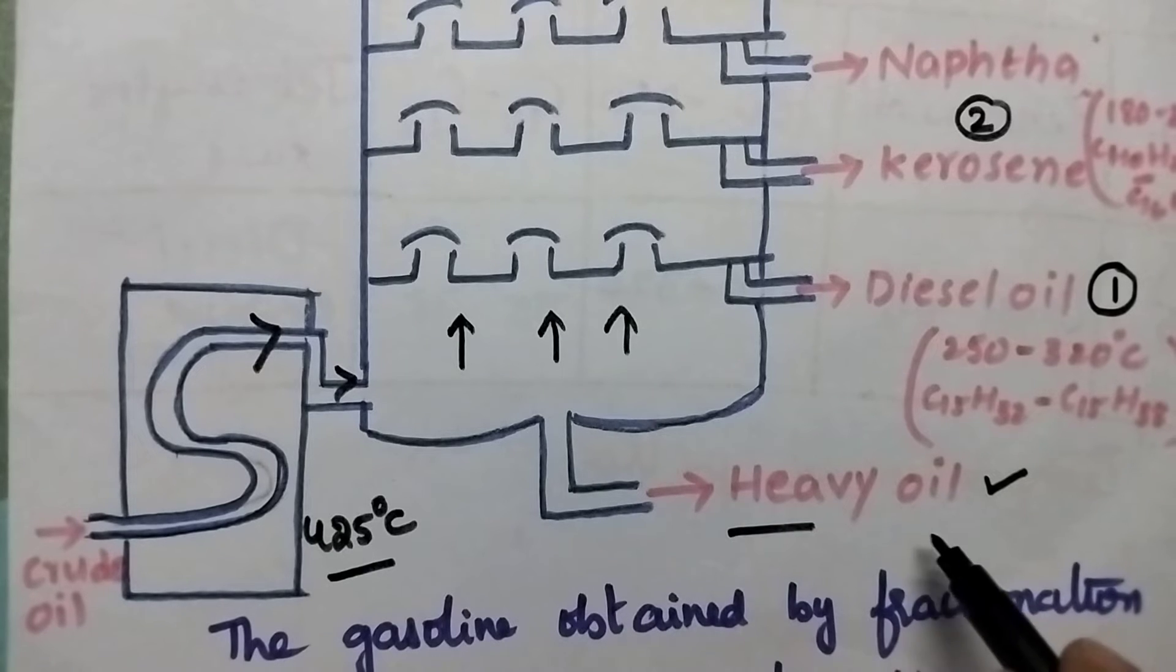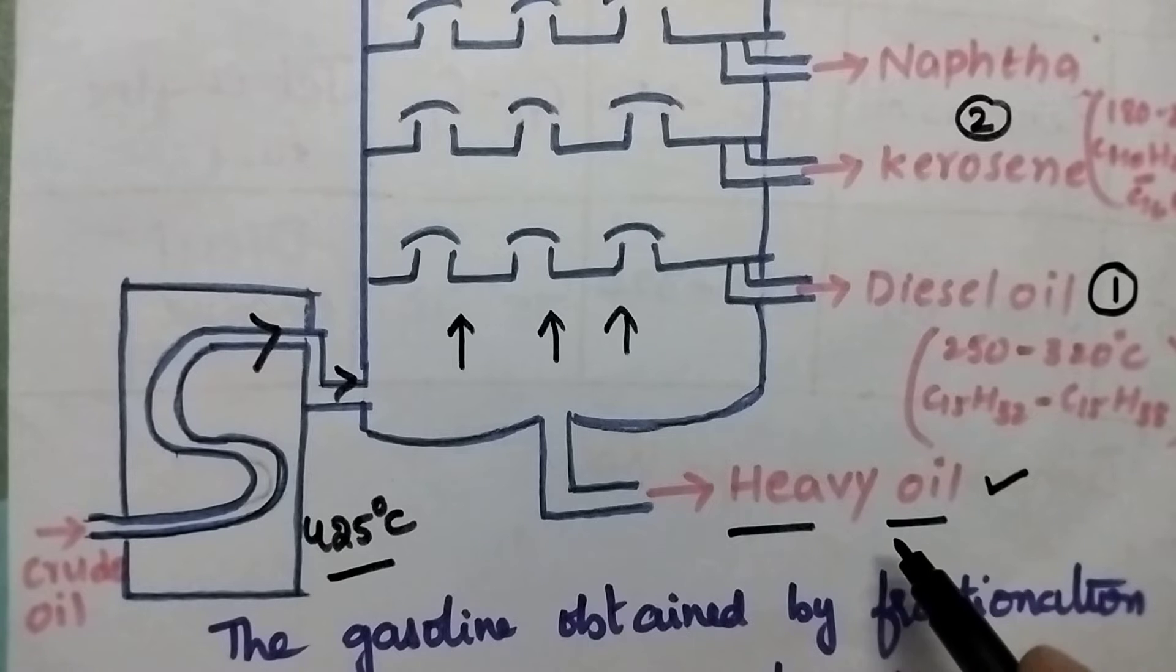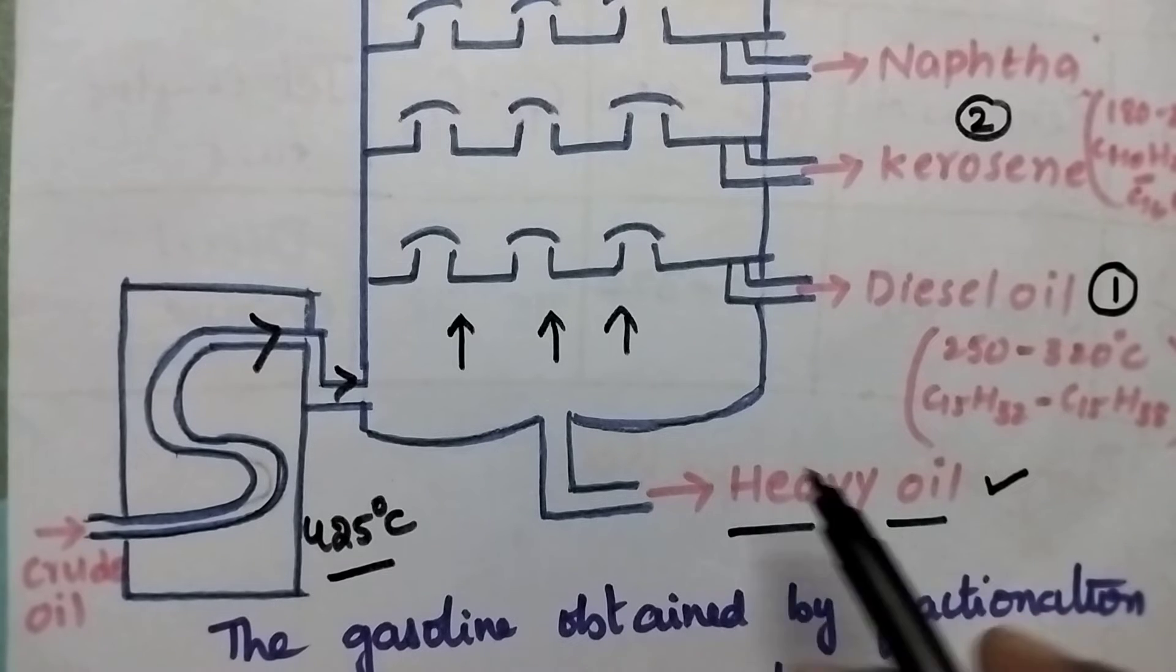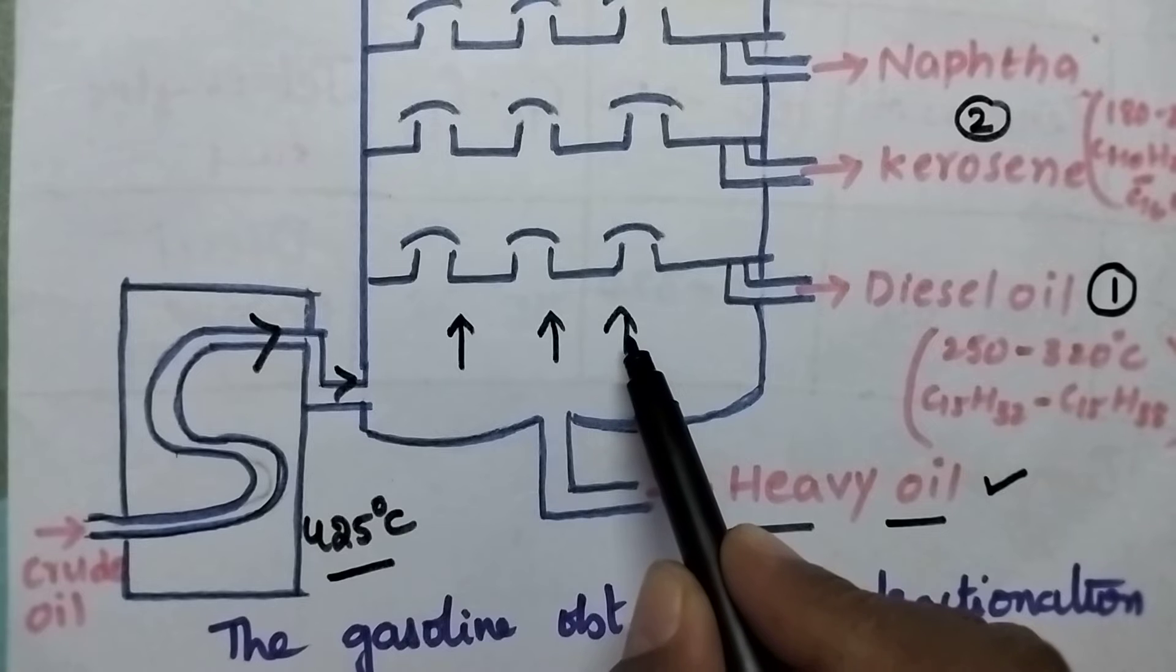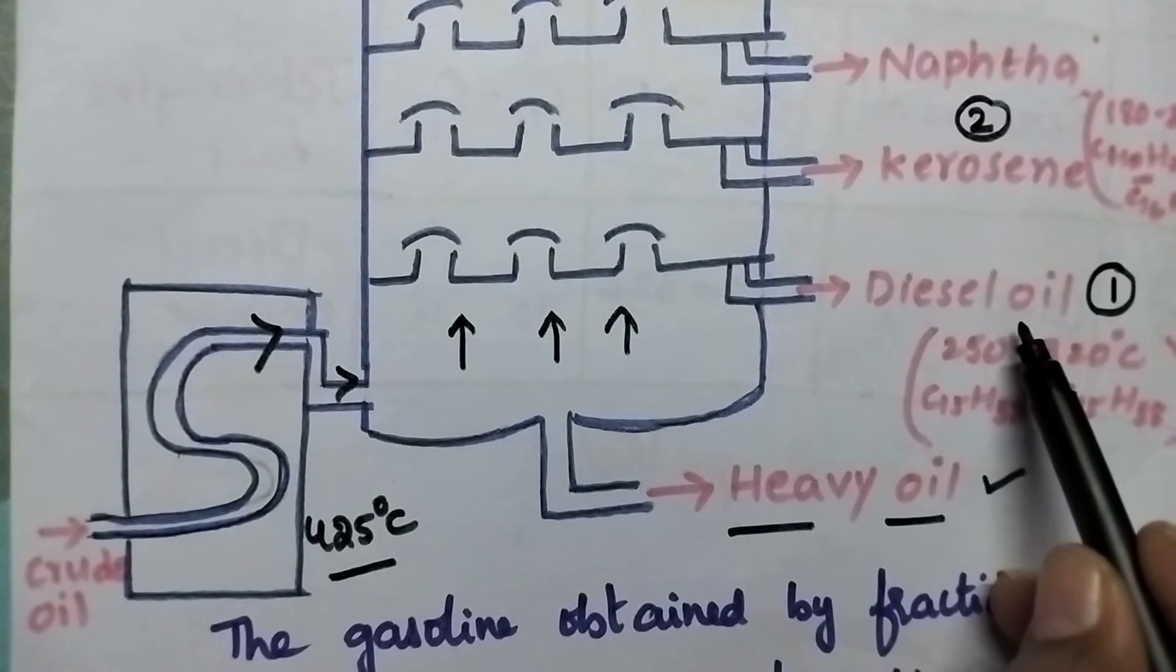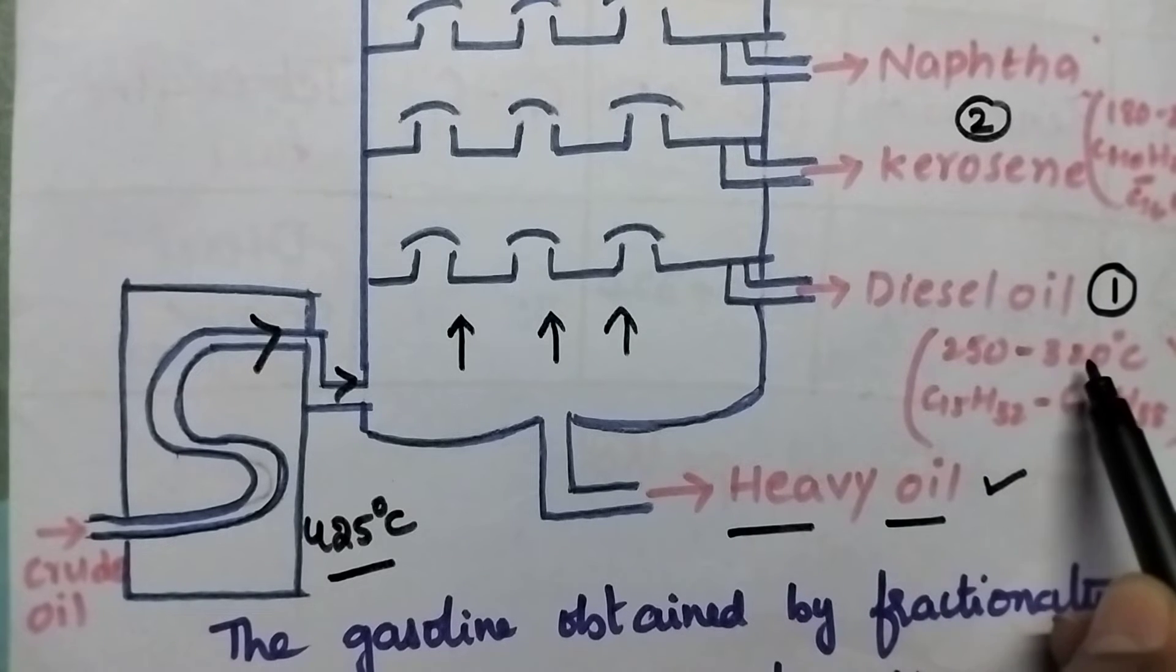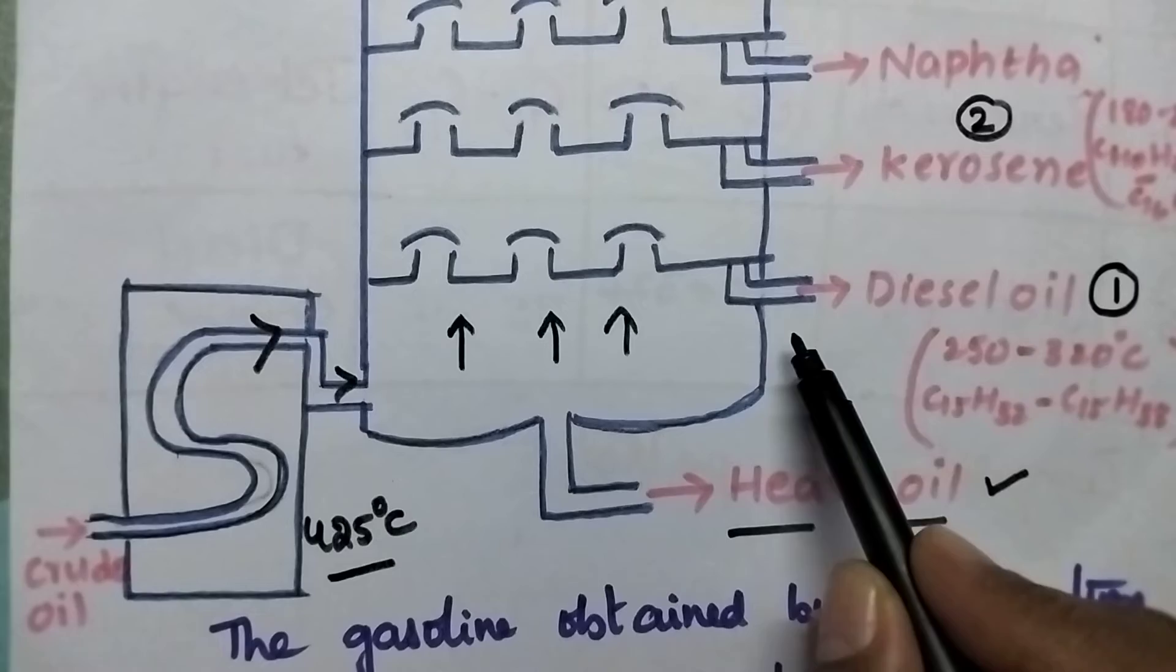With that, the heavy oil having high boiling point will be collected at the bottom of the fractionating column. Slowly, when the vapors move in upward direction, initially the diesel oil having the boiling point around 250 to 300 degree centigrade will be collected.